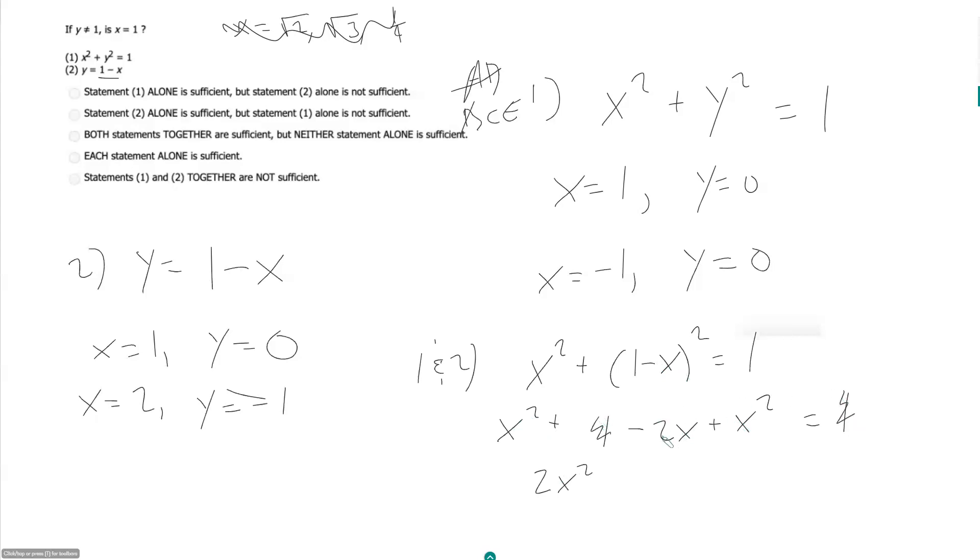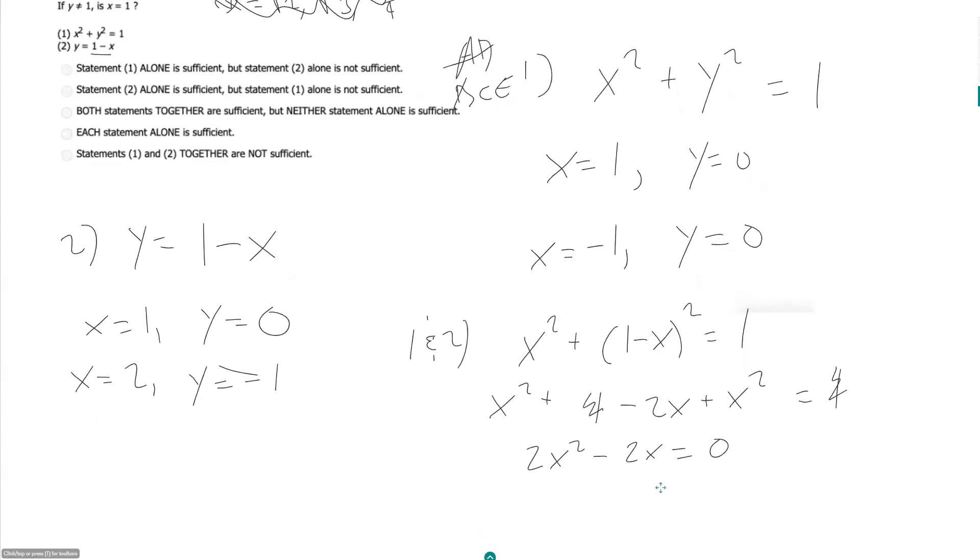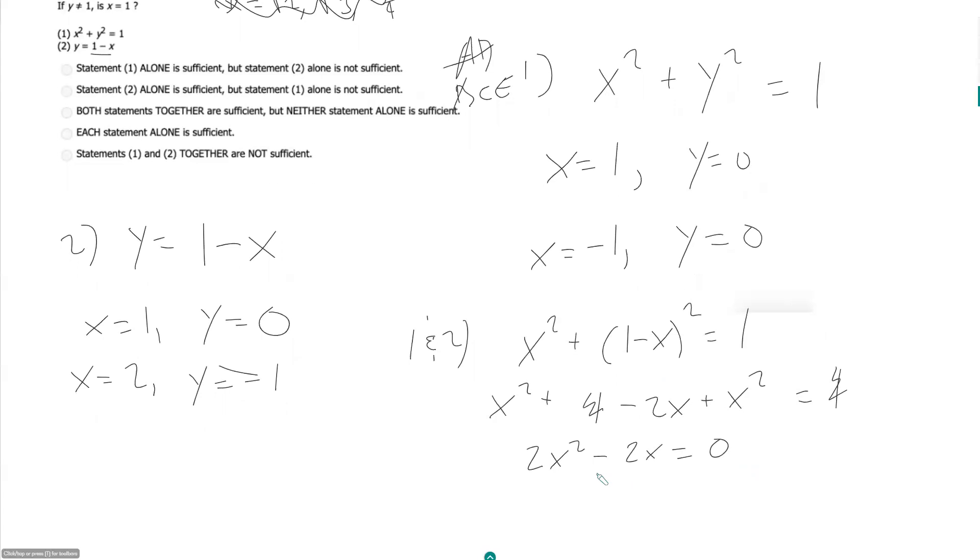So I have 2x squared minus 2x is equal to 0. And this tells me then I can factor out a 2x. So it'll be 2x times x minus 1 is equal to 0.